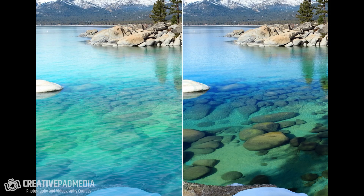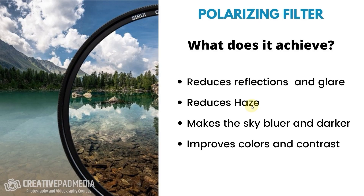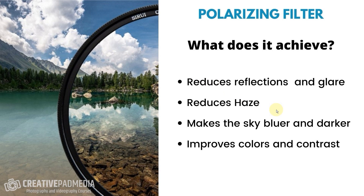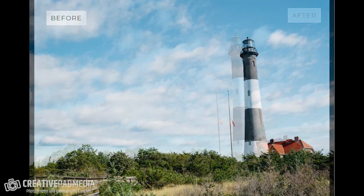It also reduces reflections, as you can see in the shots coming up. It also reduces haze — very popular with people who shoot in hilly regions, because the mountains behind can appear very hazy due to pollutants in the air. This filter only lets in certain types of light into the camera — we'll see how this works later — but basically it cuts out that haze and gives you a much better-looking shot. It also makes the sky much bluer and darker.